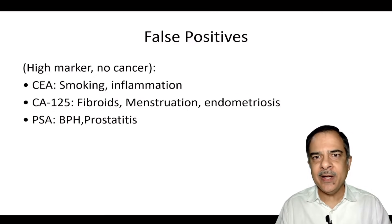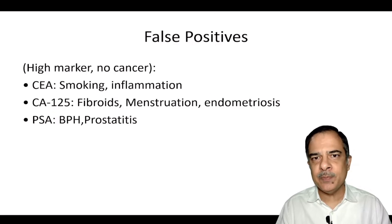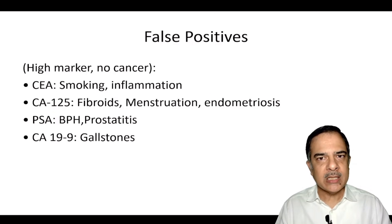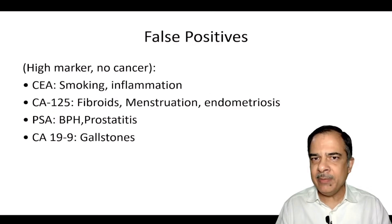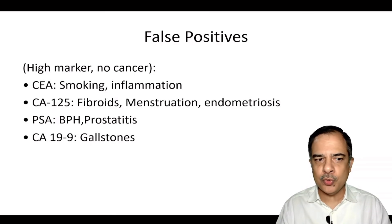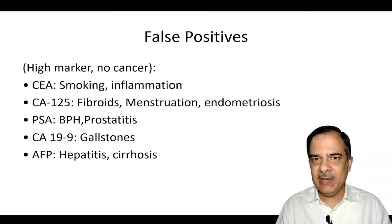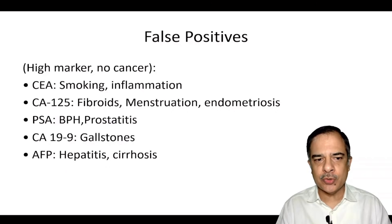PSA can be elevated in benign prostatic hypertrophy as well as prostate infection. CA19-9 can be elevated in pancreatitis or gallbladder stones. Alpha-fetoprotein can be elevated in hepatitis or cirrhosis.